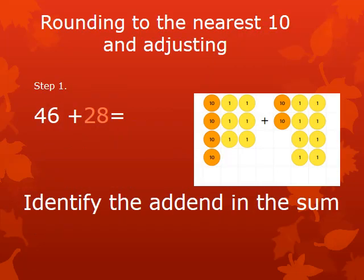Rounding and adjusting is a mental math strategy for multi-digit addition that involves adjusting one of the addends to make the equation easier to solve. Let's solve the equation 46 plus 28 using the rounding and adjusting strategy.